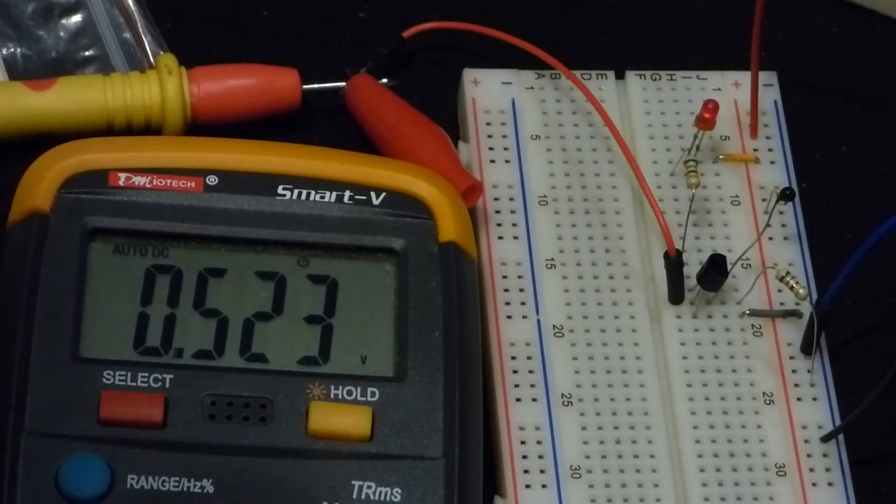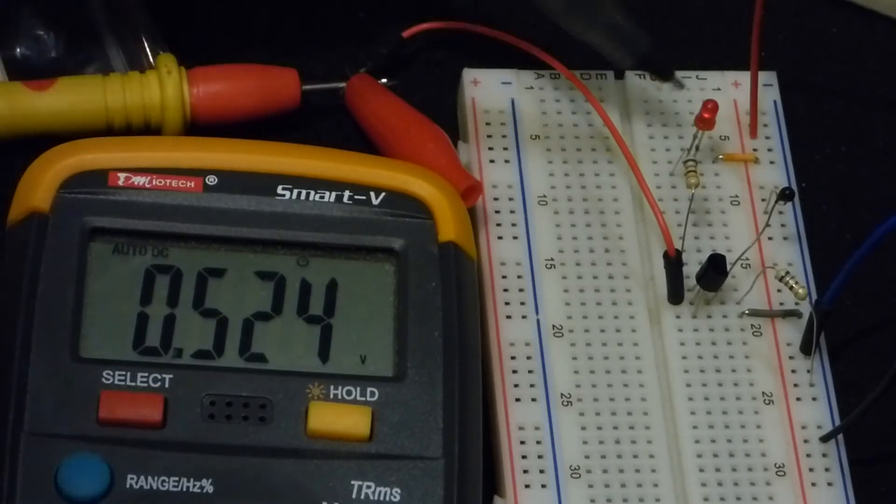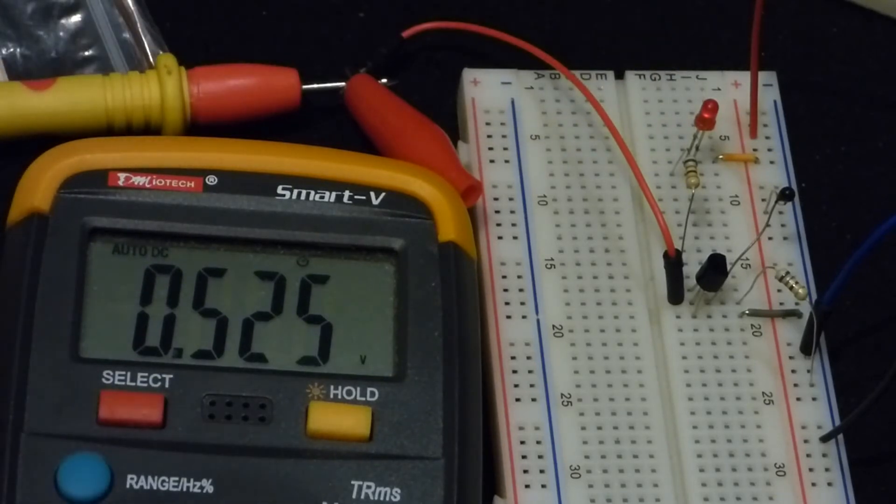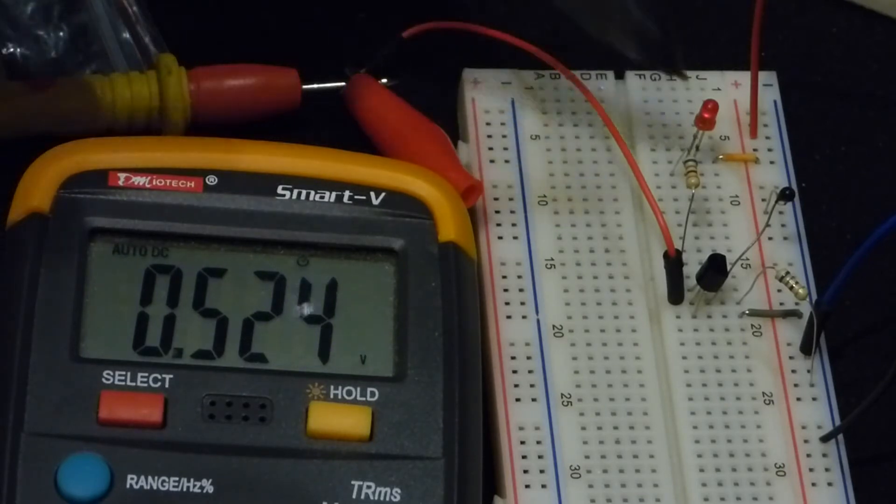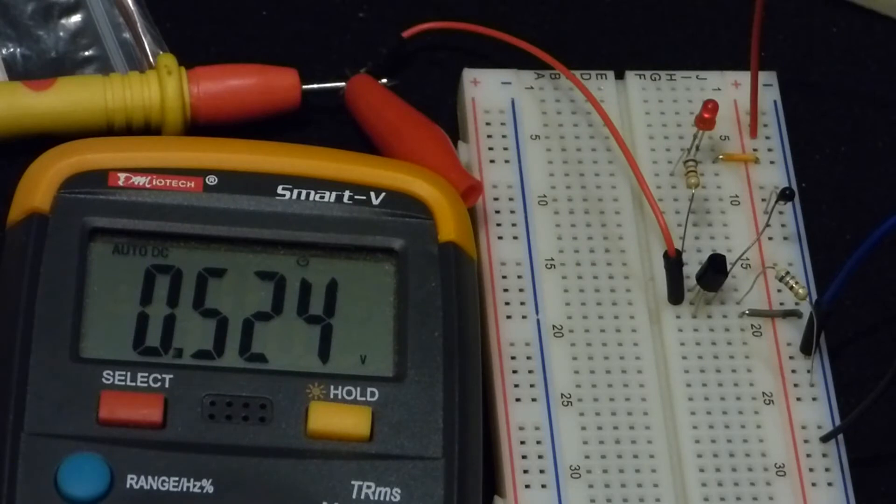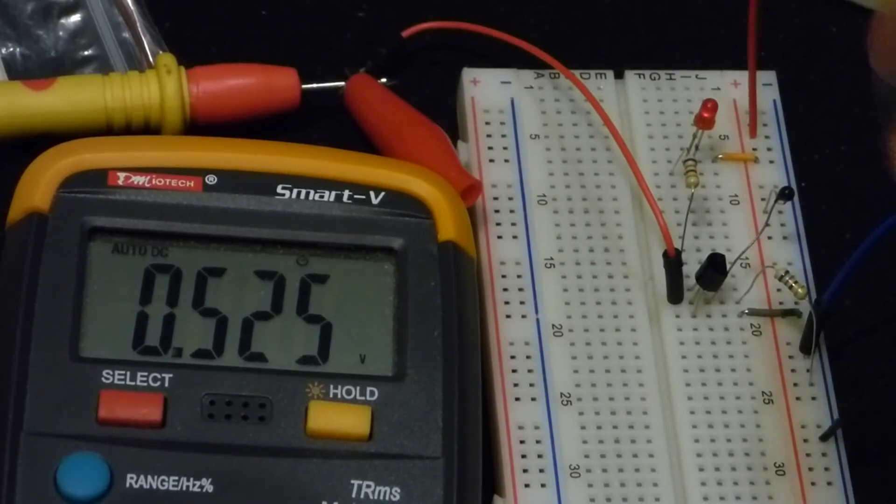Right now we have about 0.523 volts and there is a slight glow with the LED. So the transistor is not all the way off, but for the most part it is off. There is a bit of leakage probably coming through the base of the transistor, letting a bit of current go through the collector. It is mostly off.